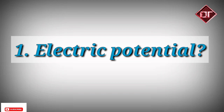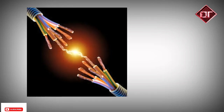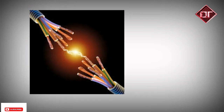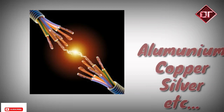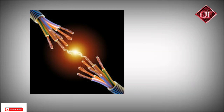We know that in a conductor there are many freely charged particles. A conductor is a material through which current can flow, like aluminum, copper, silver, etc. There are many freely charged particles moving in random directions.